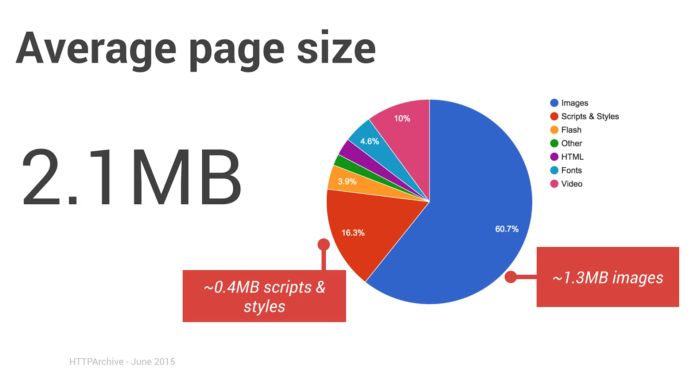The web is getting fat. Accidental slowness is a problem that a lot of us face. Performance is important — it's very easy to go and ship a site that contains a ton of images and not realize just how slow that is, especially on mobile, where people have got limited network connections and limited bandwidth.